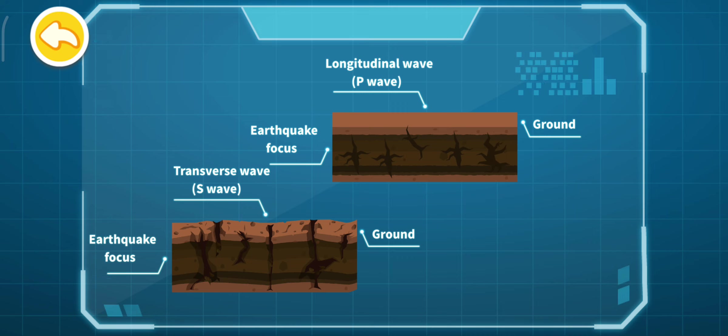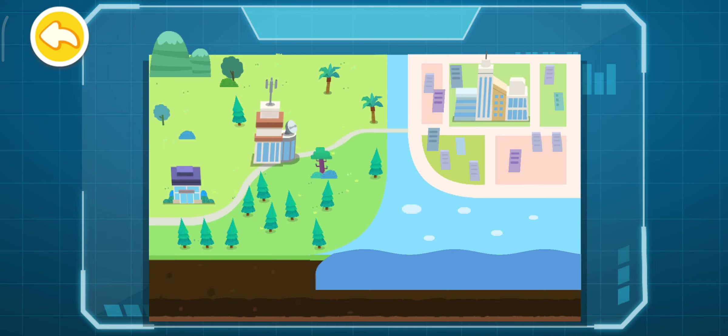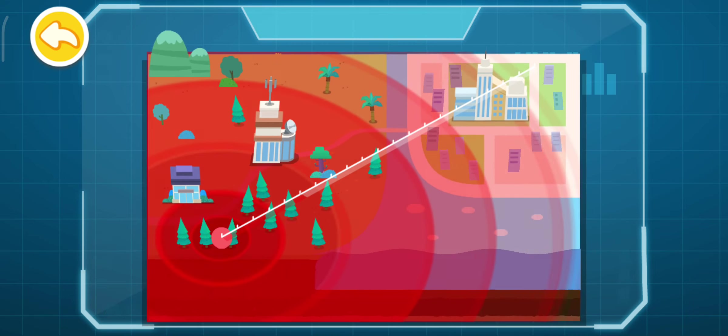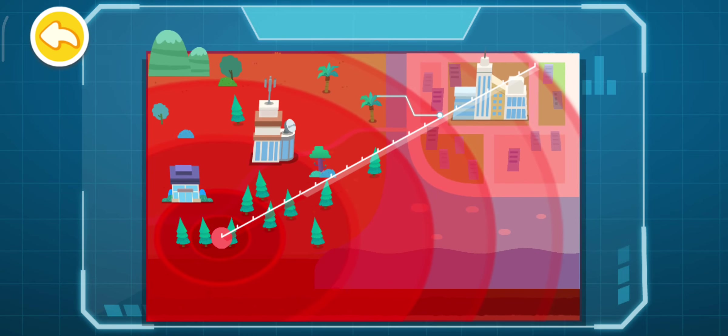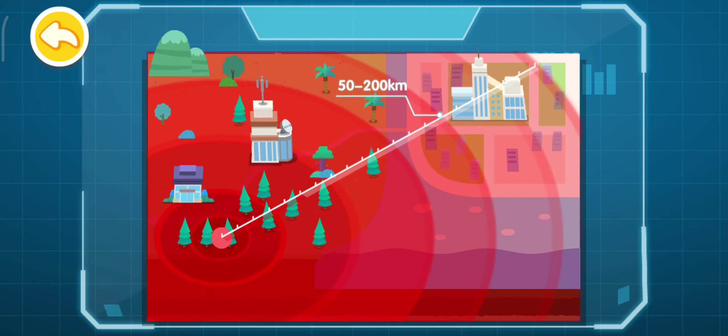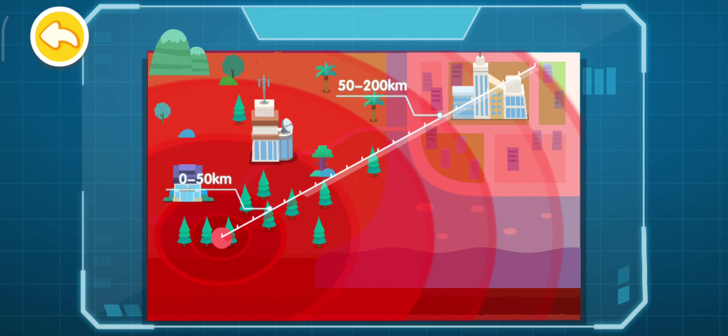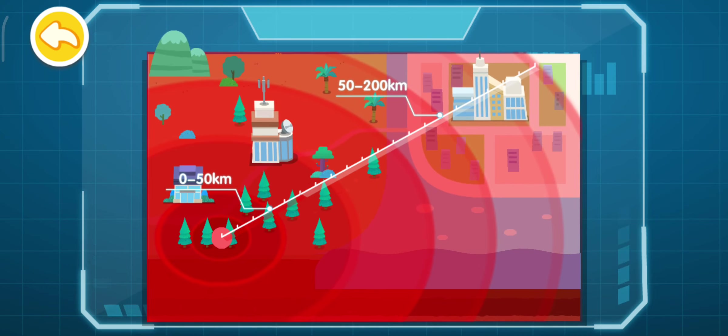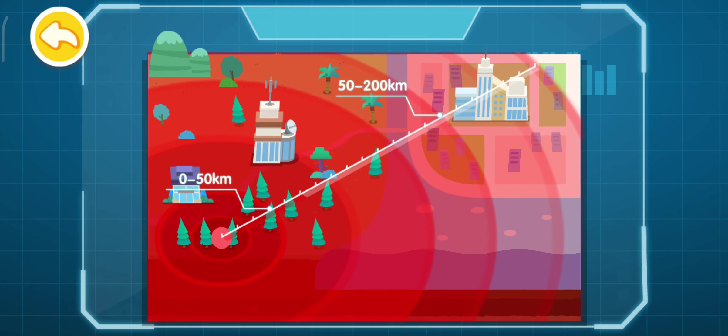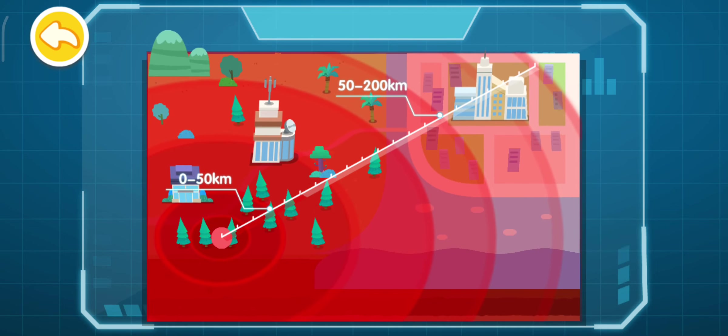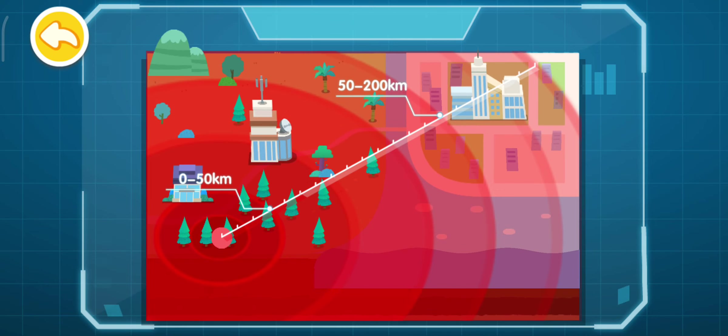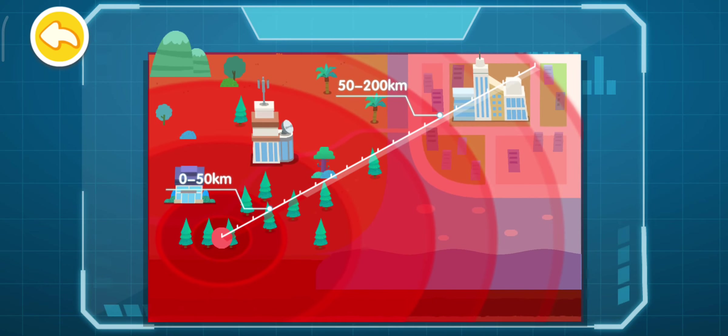There exist blind zones for earthquake warning near the earthquake epicenter. In general, the effective range of an earthquake warning is about 50 to 200 kilometers from the epicenter. As a result, it's difficult for the people to respond, even if an alert is sent for areas within 50 kilometers from the epicenter. While for areas 200 kilometers away from the epicenter, as the damage caused by the earthquake may not be serious, an alert is not required.